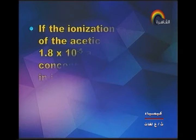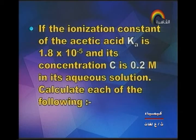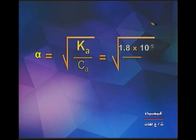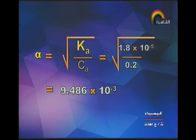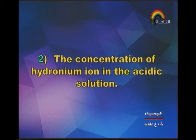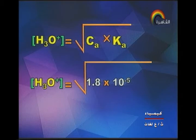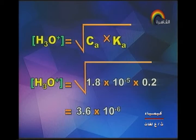Next type of question: if the ionization constant of acetic acid Ka = 1.8×10⁻⁵ and its concentration C = 0.2 molar in aqueous solution, calculate: (1) the ionization degree α = √(Ka/C) = √(1.8×10⁻⁵ / 0.2) = 9.486×10⁻³. (2) The concentration of hydronium ion = √(C × Ka) = √(1.8×10⁻⁵ × 0.2) = 3.6×10⁻⁶ mol/L.